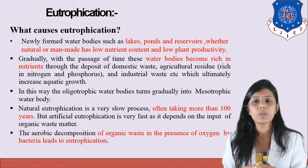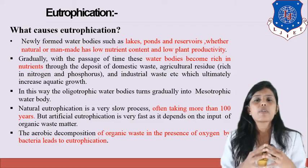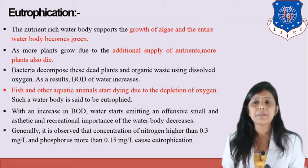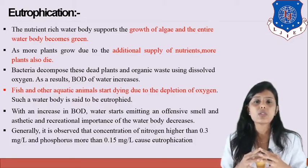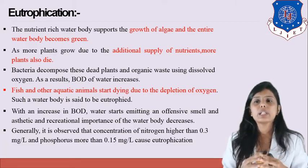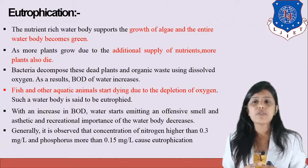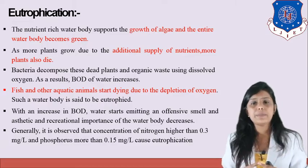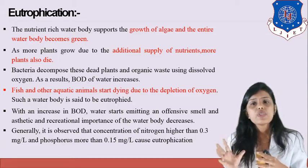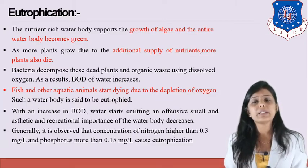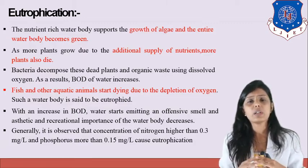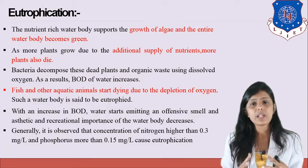The aerobic decomposition of organic waste in the presence of oxygen by bacteria leads to eutrophication. The nutrient-rich water body supports algae growth and the entire water becomes green. As more plants grow and die, bacteria decompose them using dissolved oxygen, so BOD of the water increases. Fish and other aquatic animals start dying due to oxygen depletion. With increasing BOD, the water emits an offensive smell and the aesthetic and recreational importance of the water body decreases. It is generally observed that nitrogen concentration higher than 0.3 mg/L and phosphorus more than 0.15 mg/L causes eutrophication.